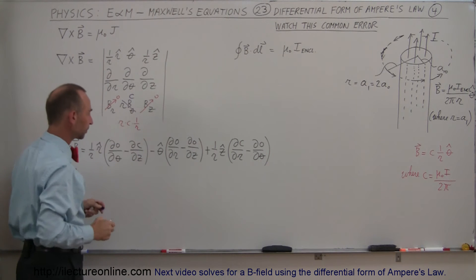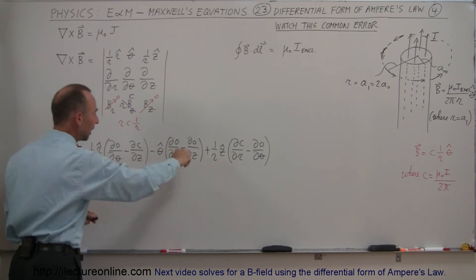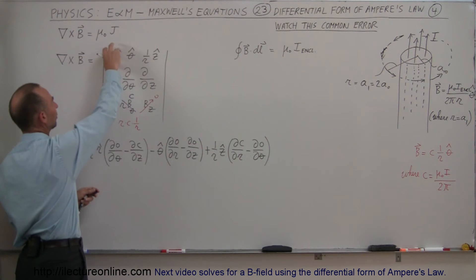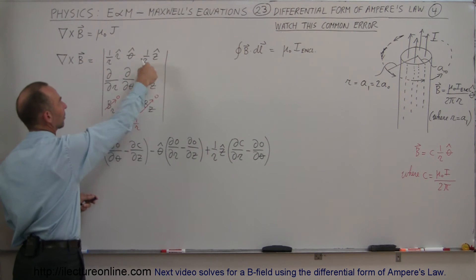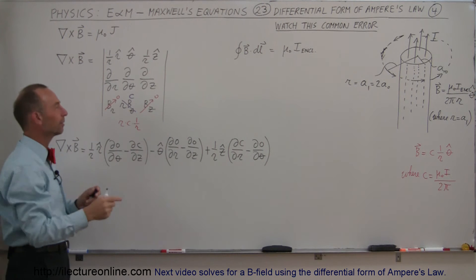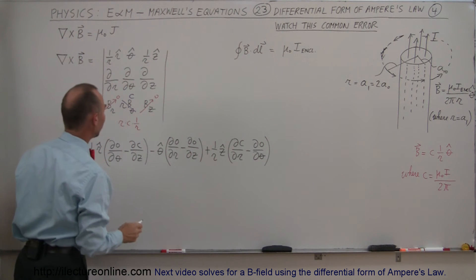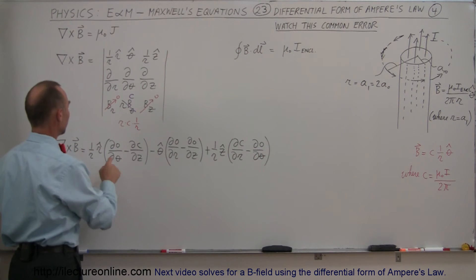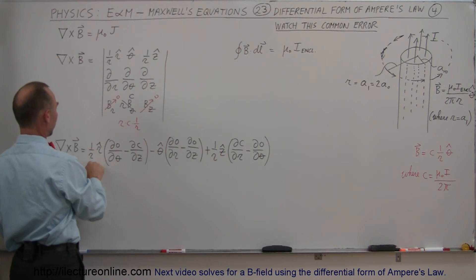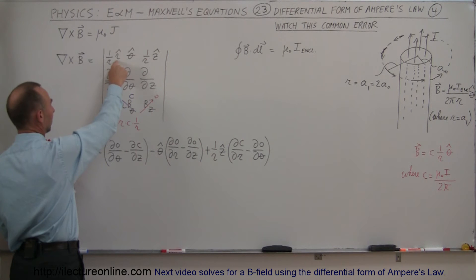So then if we take the curl and write it out like this, which is of course equal to this times the product of these elements—this times this minus this times this—and of course it's not really a product because it's the partial differential. So if we write the curl all the way out, what happens? We have 1 over r times r in the r direction times this times this, this times this.